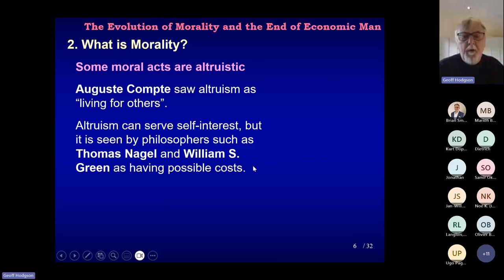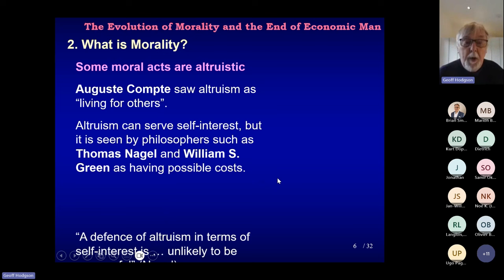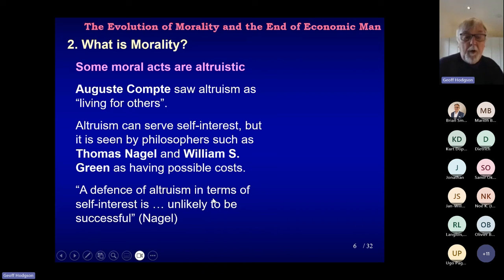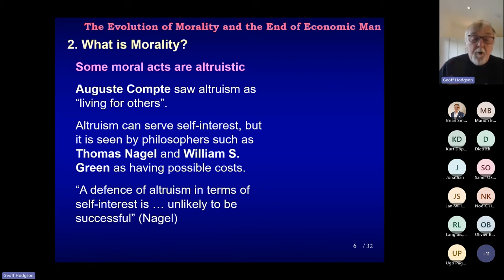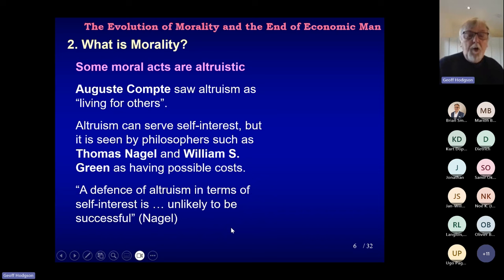If an act is without potential cost to the individual, then for these philosophers you could question its description as being altruistic, even though it looks kind. As Nagel says, a defence of altruism in terms of self-interest is unlikely to be successful. This obviously reflects on economics and the idea of utility-maximising so-called economic man. Much of the discussion in economics is premised on the idea that we have to create utility functions where altruistic behaviour is possible — but ultimately this is basing it on self-interest, even though there are other-regarding preferences. The individual is still maximising his or her own welfare.